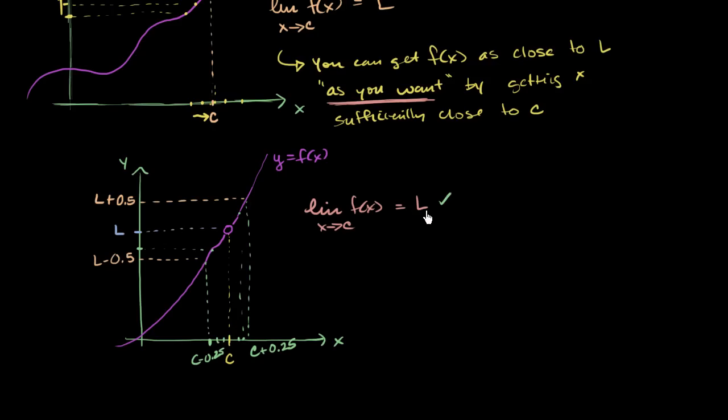And in order for this to be true, you'd have to be able to do this for any range, for any range that they give you, for any range around L that they give you. You have to be able to get f of x within that range by finding a range around c that as long as x is that range around c, f of x is going to sit within that range.